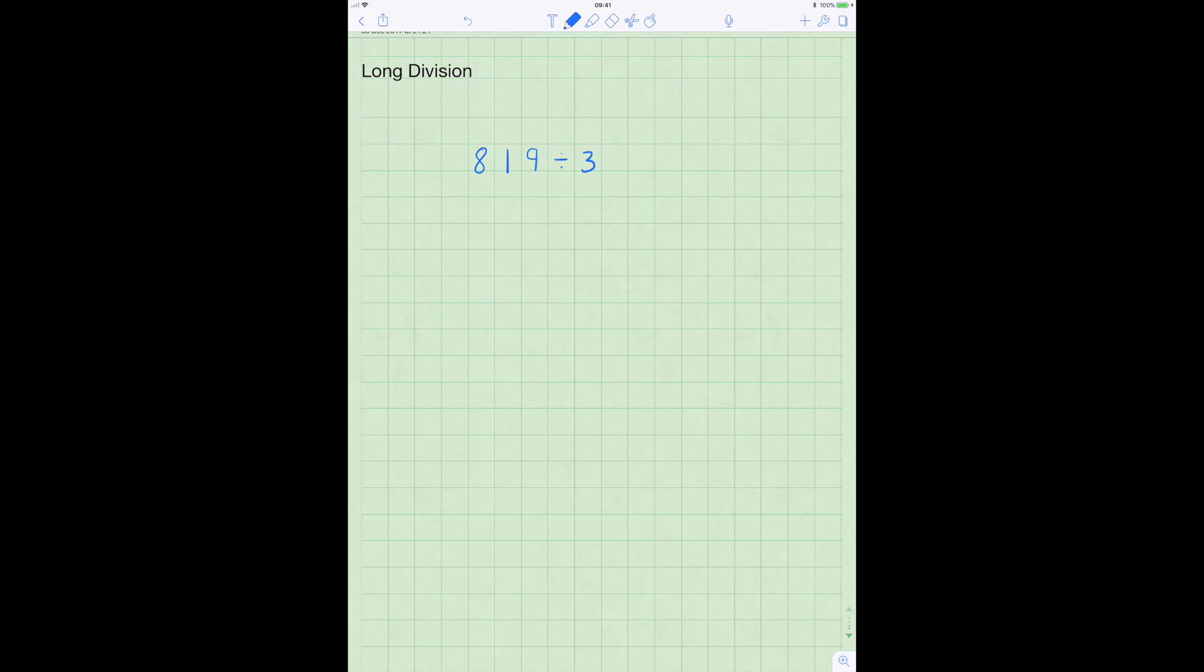And the sum that we're going to look at is 819 divided by 3. And that means that what we want to do is to divide 819 into 3 equal parts. So we set it up like this. 3 on the outside of the division symbol and 819 on the inside.